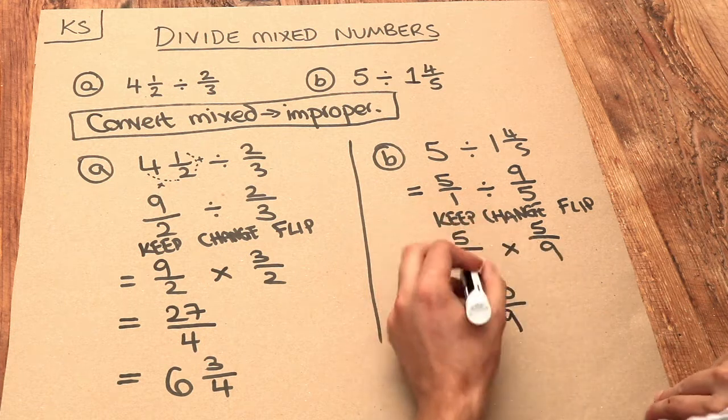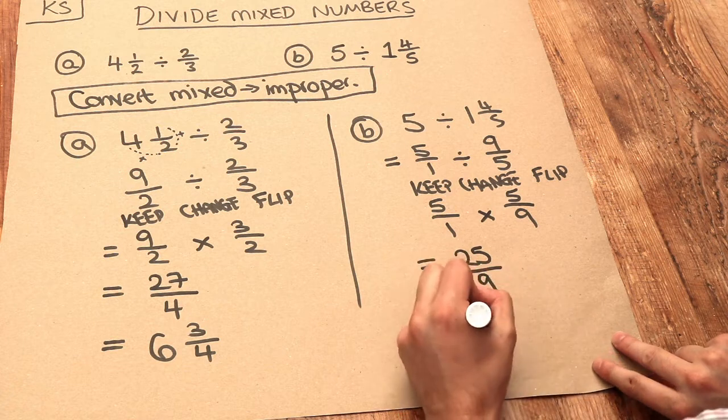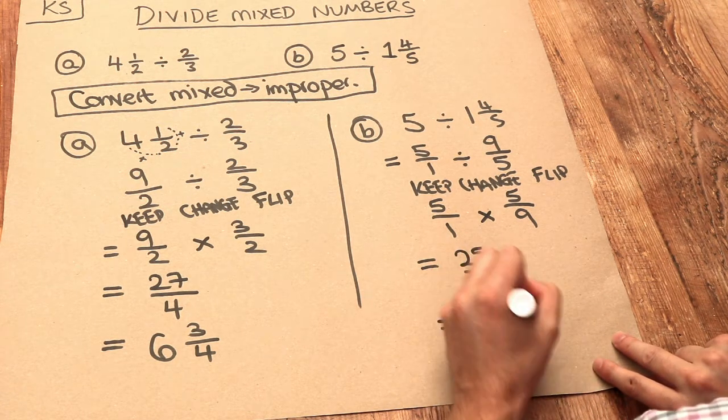And again if we want to we could convert that to a mixed number. 9 goes into 25 two whole times, and we have 7 remaining, so that's 2 and 7 ninths.